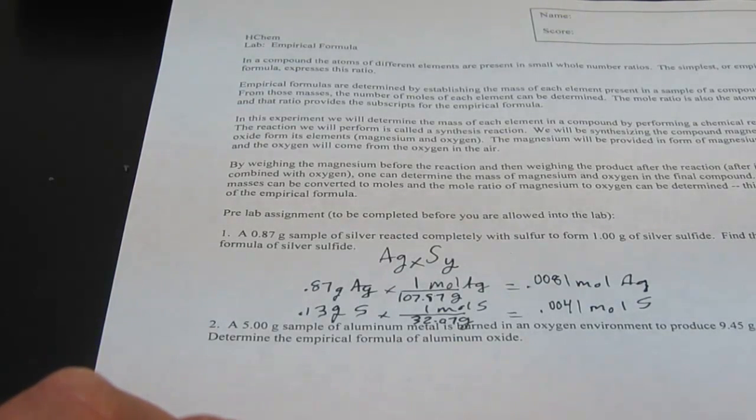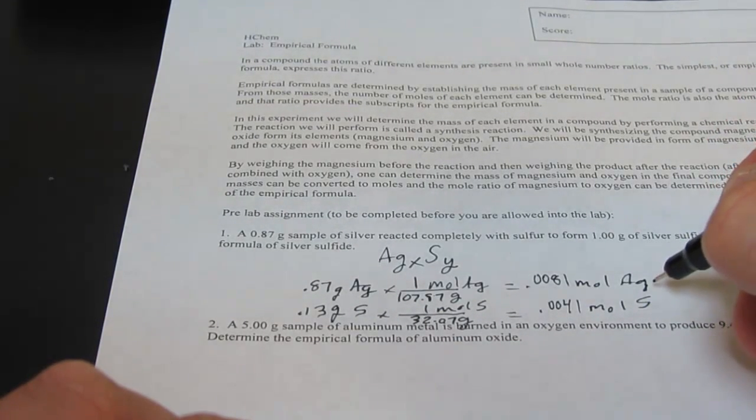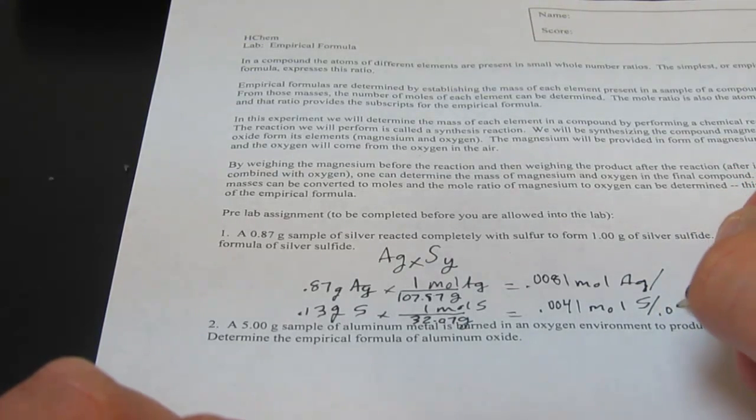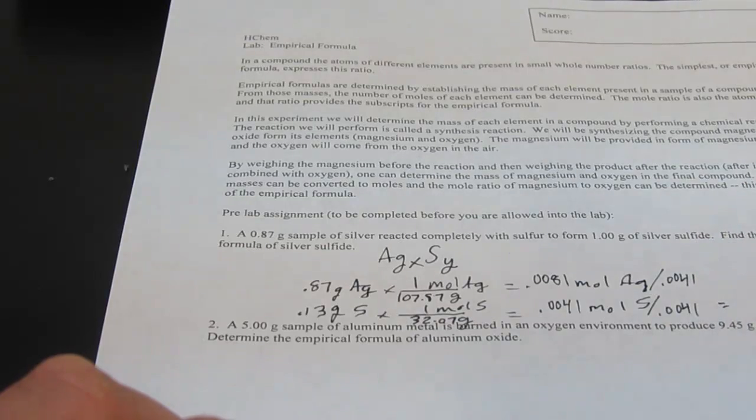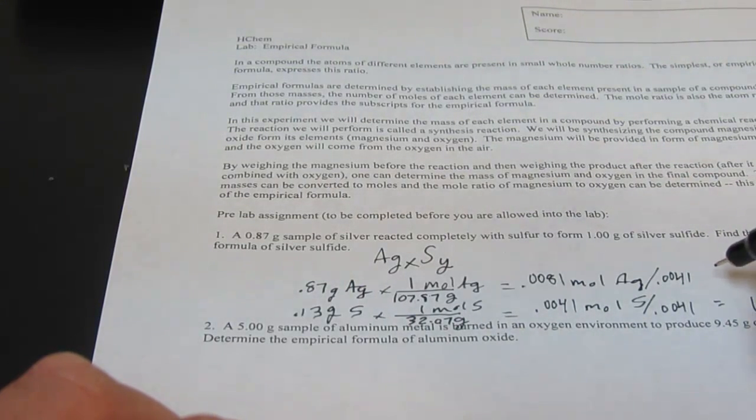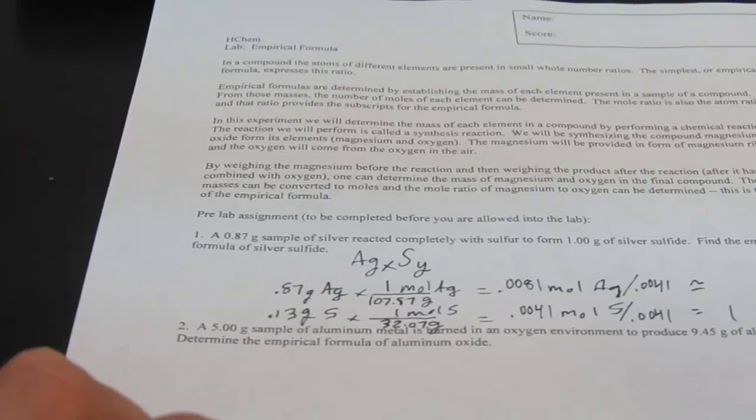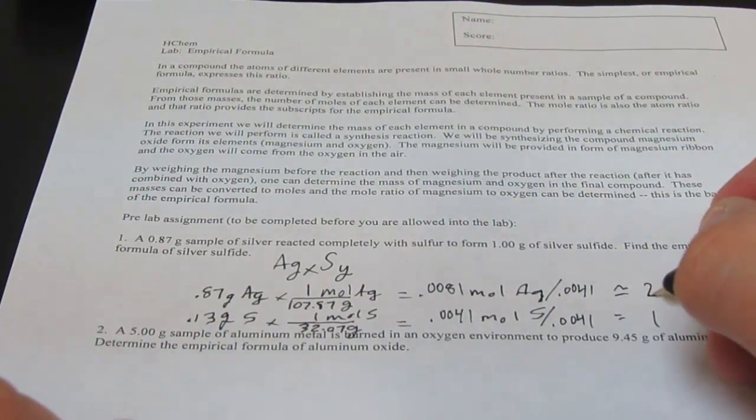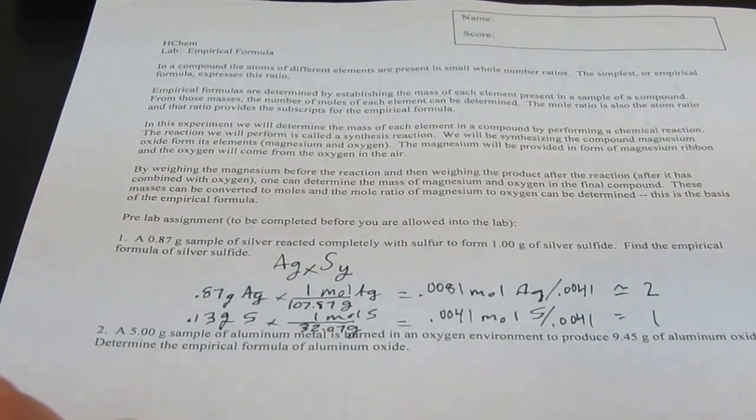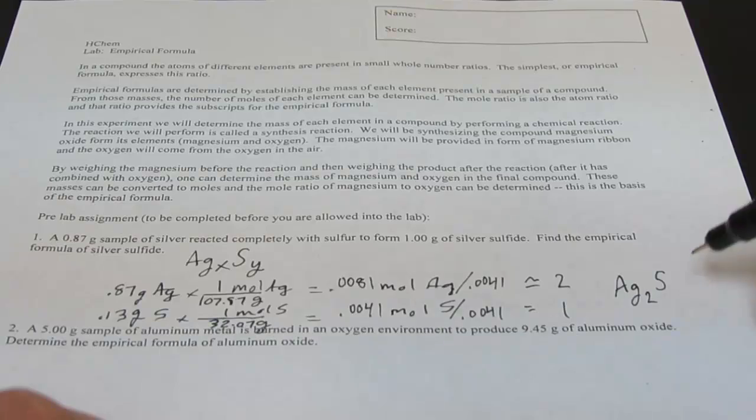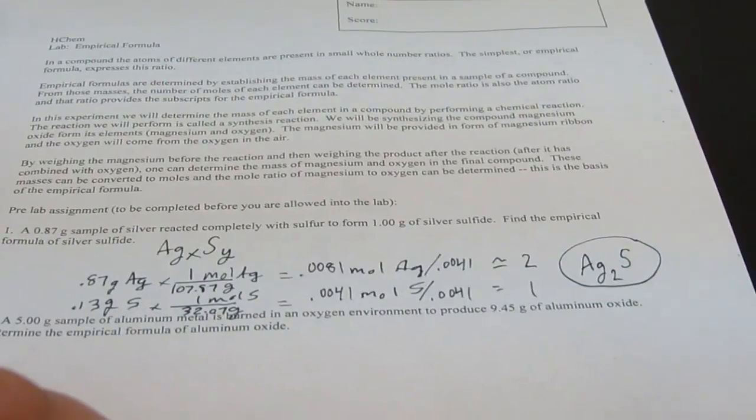Now we need to find the lowest whole number ratio. So to do that, we divide by the lowest number of moles. So of course, we're going to divide both of these by 0.0041. Of course that equals one, and that is pretty close to two. So that means my empirical formula would be two moles of silver for every one mole of sulfur. So I would write that as Ag subscript 2 and S. I don't need to put the number one after sulfur to show that there's one mole.